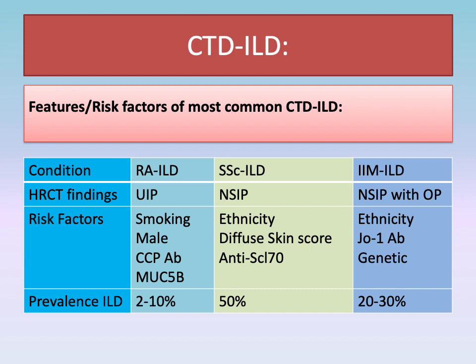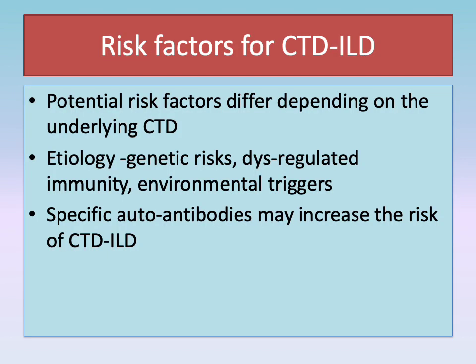In rheumatoid arthritis-related ILD, the strongest risk factors include smoking, male sex, CCP antibodies, MUC5B gain of function mutation. While in systemic sclerosis-associated ILD, ethnicity, diffuse skin score, and TSCL antibodies are the strongest risk factors. In inflammatory idiopathic myopathies-associated ILD, ethnicity, G1 antibodies, and genetic factors play an important role. The complex etiology of CTD-ILD includes genetic risk, dysregulated immunity, and environmental triggers such as smoking, which interact leading to the final disease. Specific autoantibodies may increase the risk of CTD-ILD.